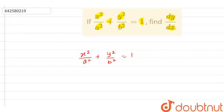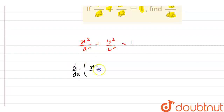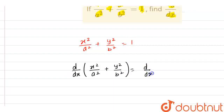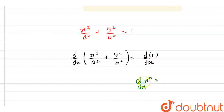Now if we differentiate both sides with respect to x, we can write it as: d by dx of our LHS, that means left hand side, x squared by a squared plus y squared by b squared, and at our right hand side we are having d by dx of 1. When we have d by dx of x raised to power n, it gets differentiated as n into x raised to power n minus 1.